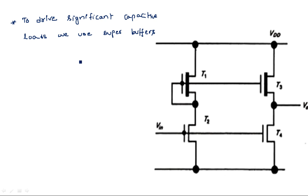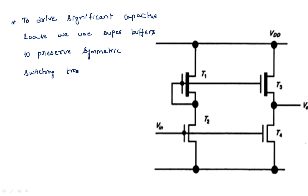We use super buffers to preserve symmetric switching transients — that means the 0-to-1 transition and the 1-to-0 transition both must be the same. How much time the 0-to-1 transition takes, and the voltage level in returning from 1-to-0, it takes the same amount of time and voltage level. This is a very important feature of super buffers.